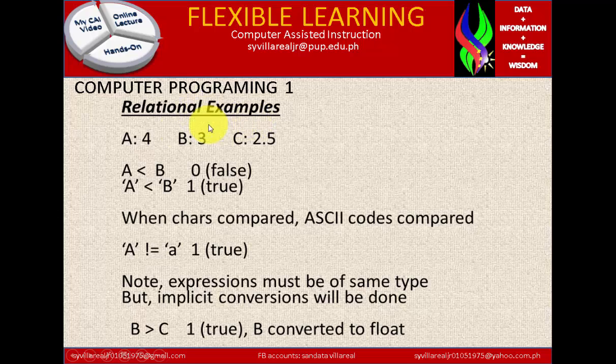Now relational examples. False: if a is 4 and b is 3 and c is 2.5, then a is less than b. So this is false, because a is 4 and b is 3. So if we're going to subtract 4 minus 3, we have 1. So it is not equal and a is not less than b. So false. 0 is false.